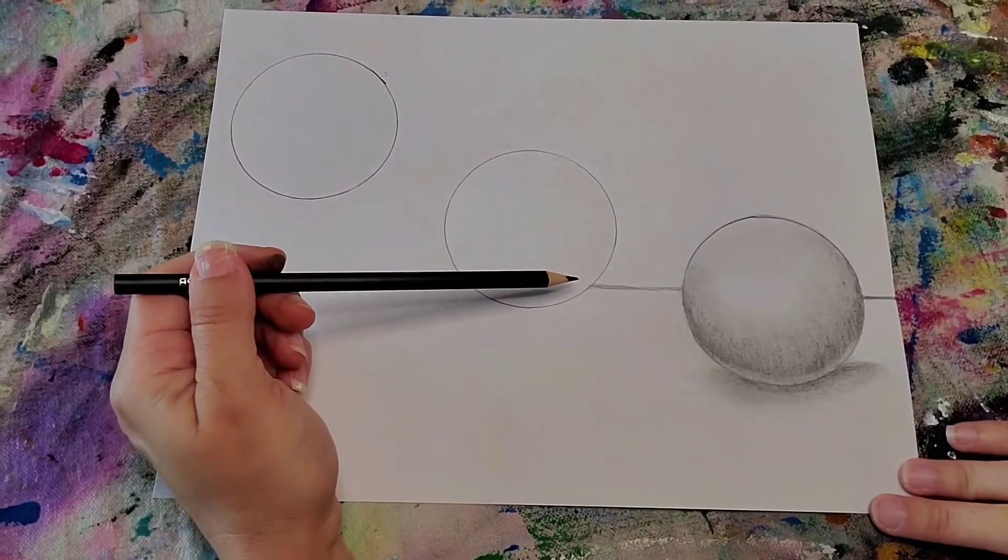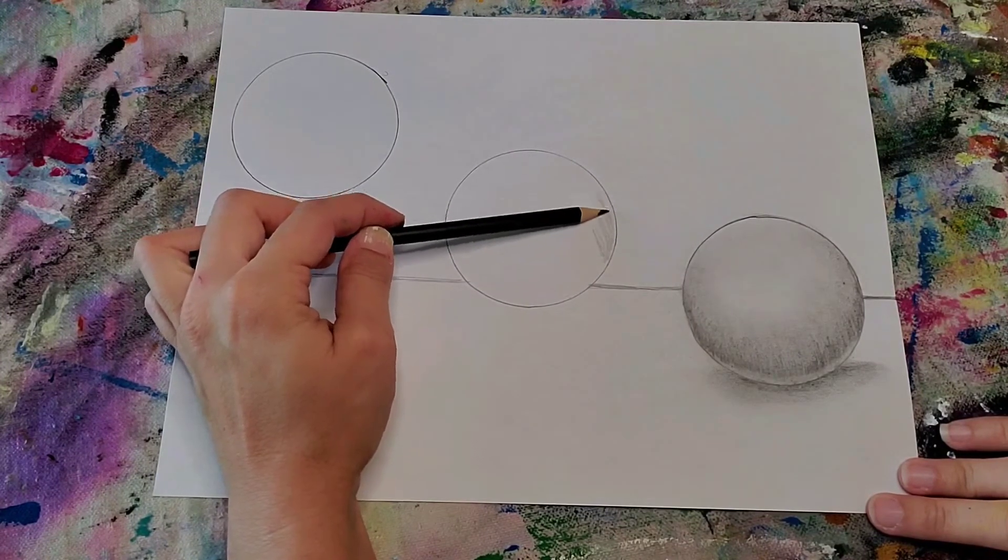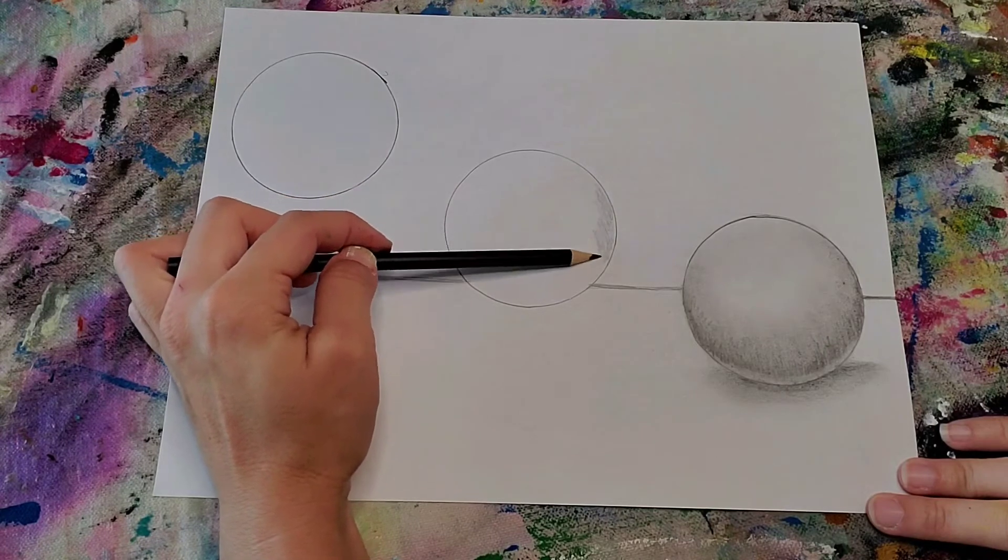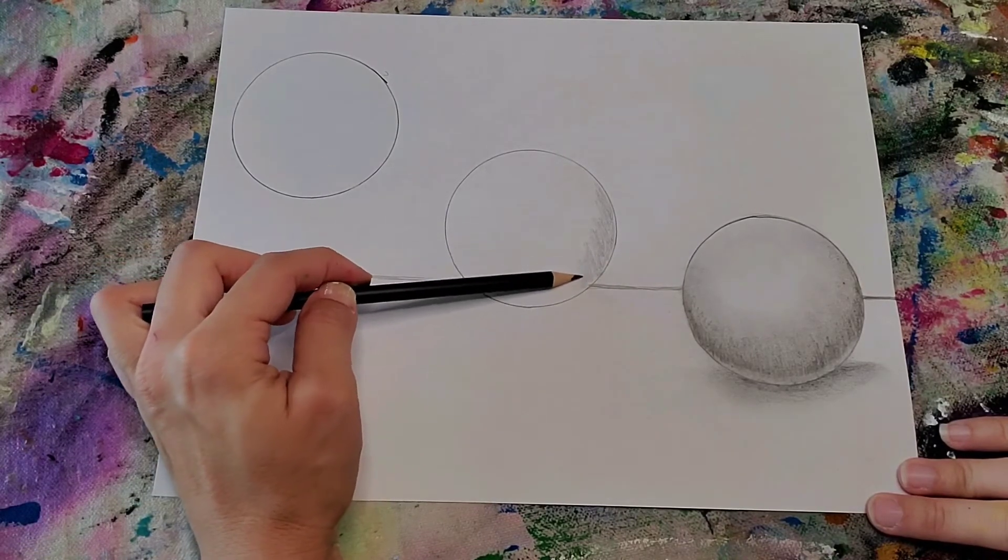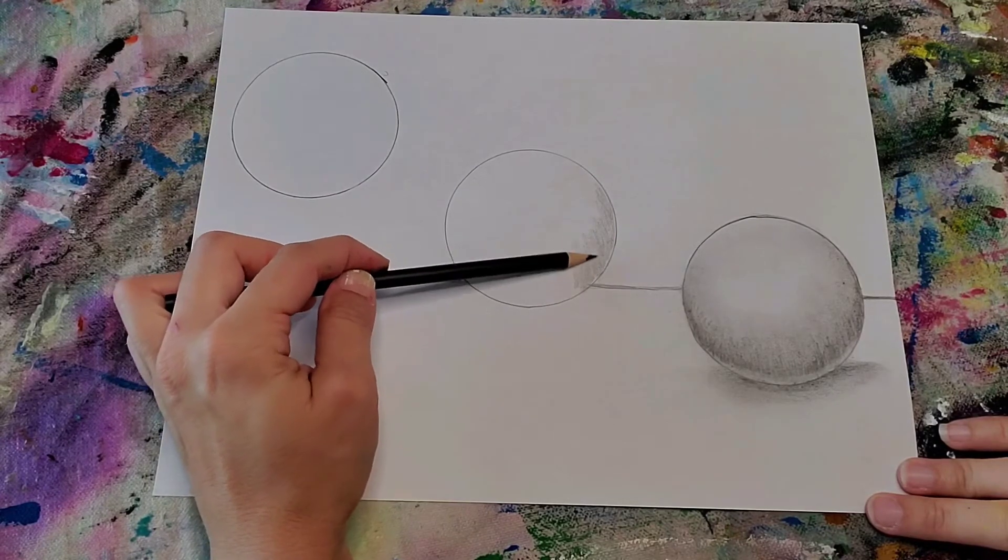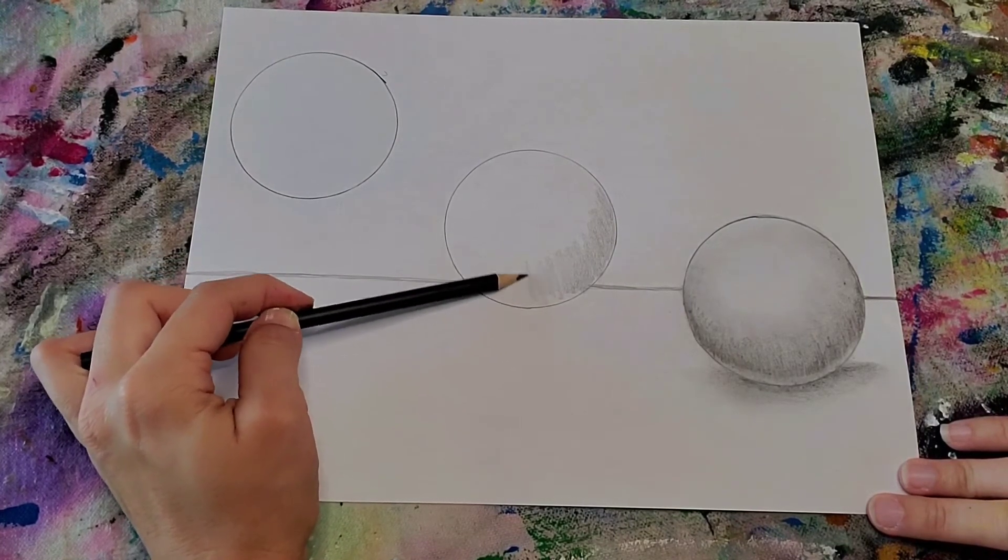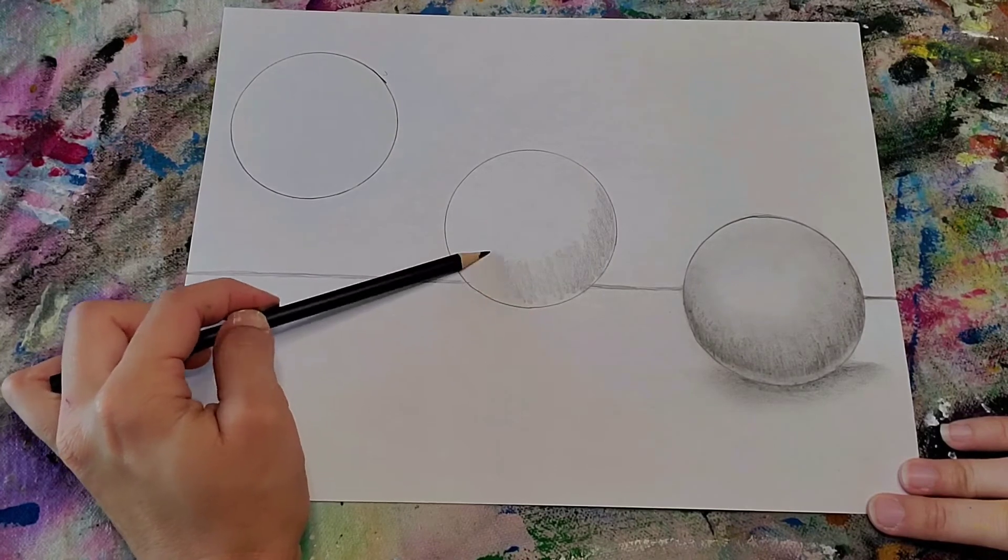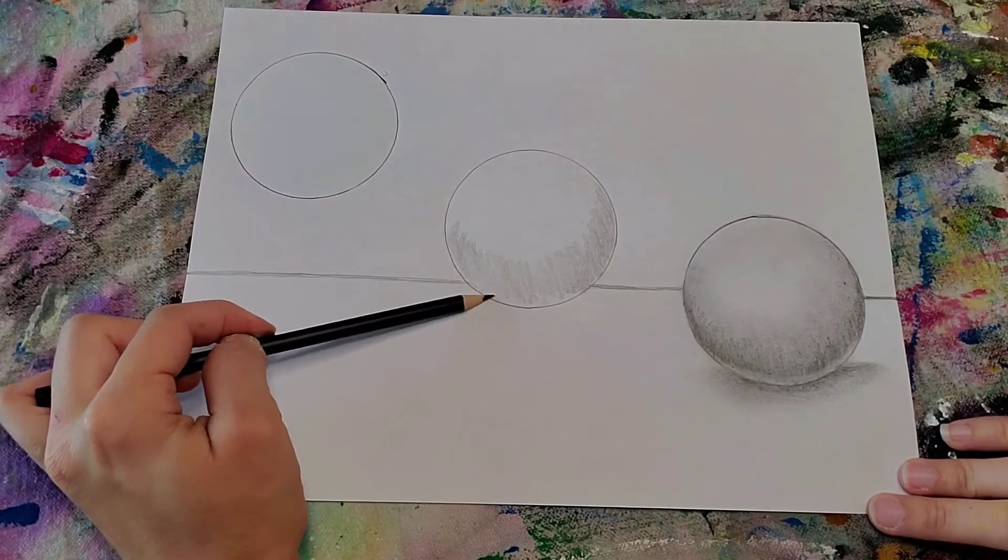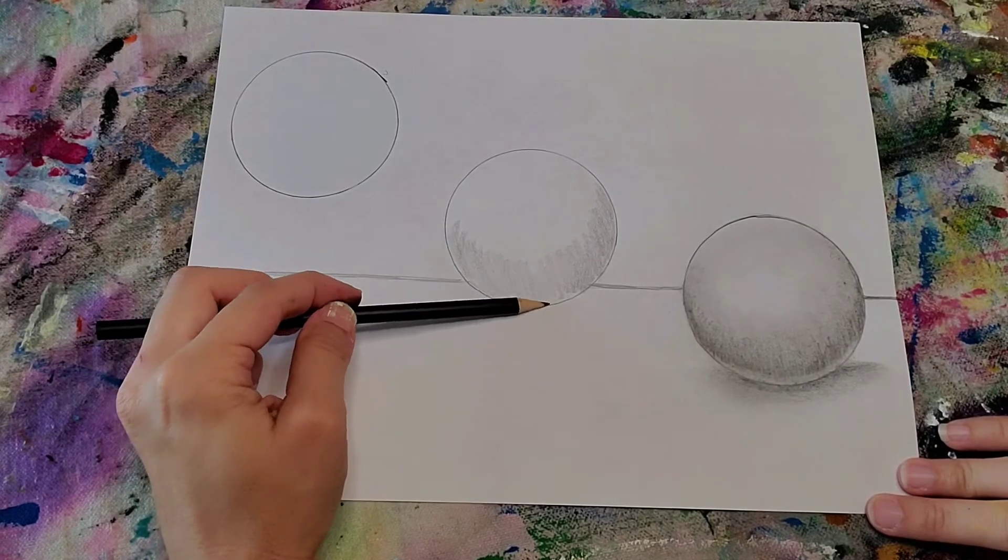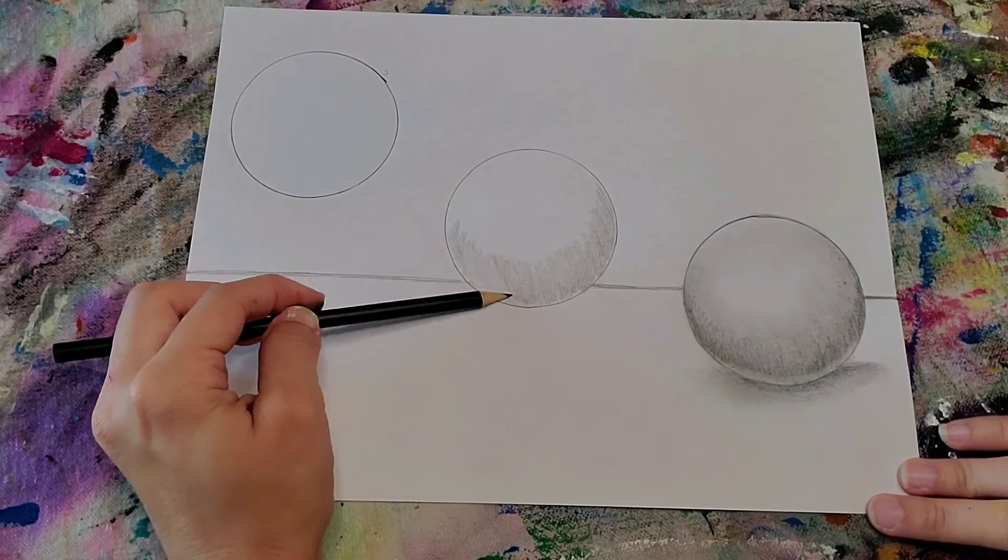Now we're going to do the same thing up here. So I'm turning my pencil on its side. You're going to be perfect at circles by the time we get to circle number three. You can twist your pencil when it's starting to get worn down on one side, just twist it around.